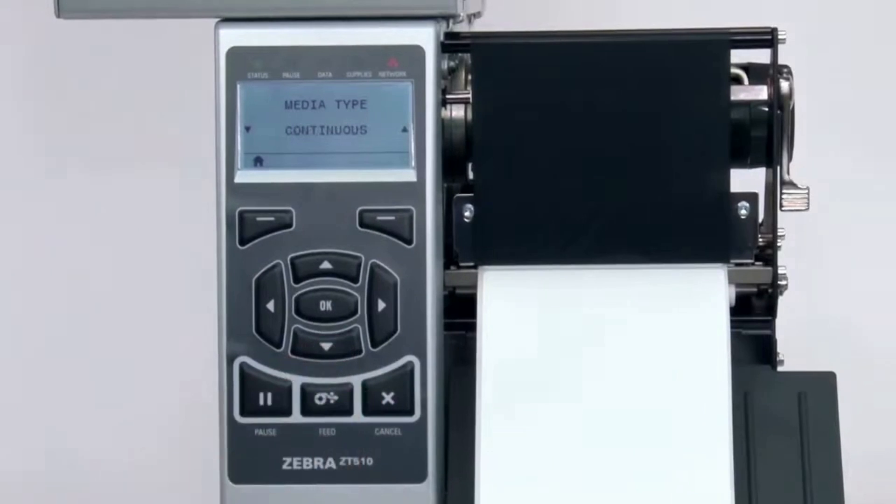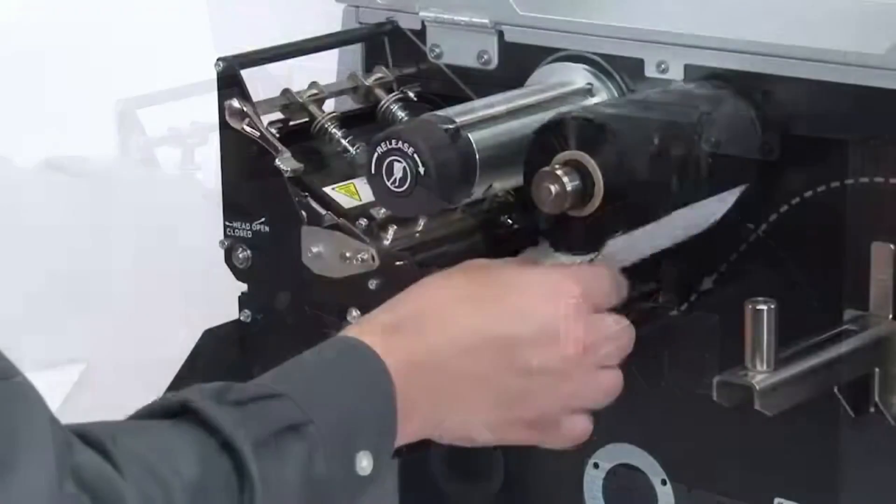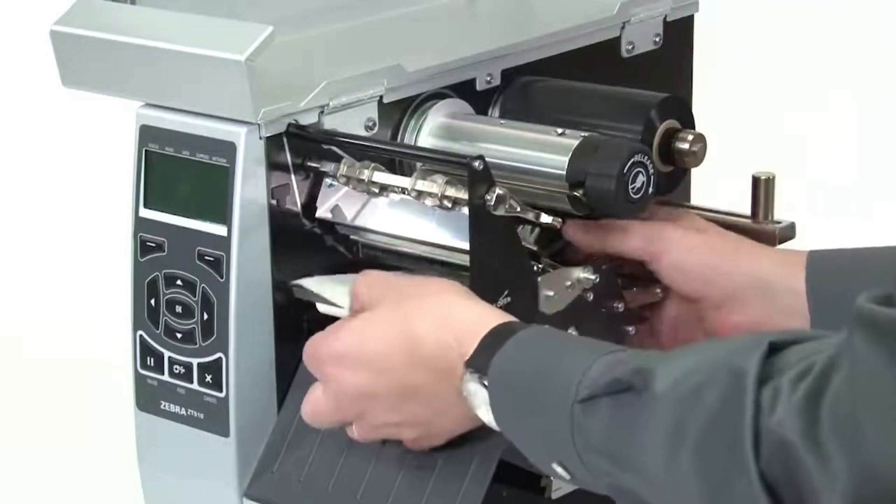If your media has a continuous roll with no start position features, select continuous in the menu. Please note that the label length on continuous media is controlled by the file you're printing. Now load the media and ribbon. Make sure the media and ribbon are fully inserted.